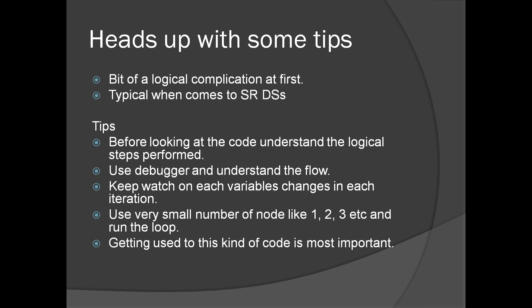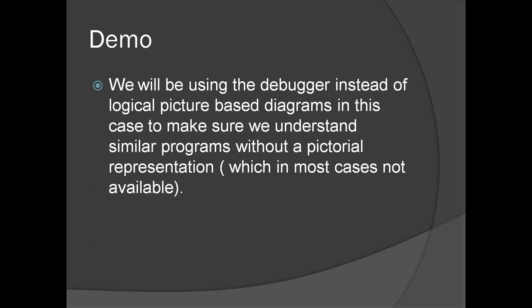Use the debugger to understand the flow. Keep looking at the value of each variable in each iteration. Try to use a small number of nodes and run the loop. The most important thing is getting used to this kind of code which has this amount of complication. In some cases the algorithm or the logic is not available to us — all we have is some code which we need to understand. There won't be any documentation, sometimes there won't be any comments inside the code. All we can do is debug and understand it.